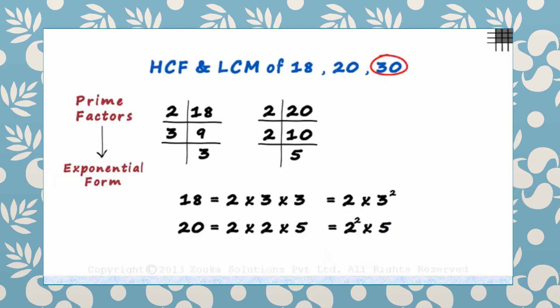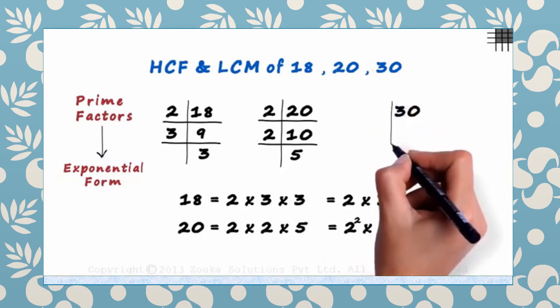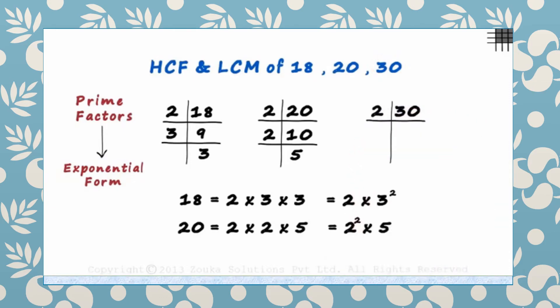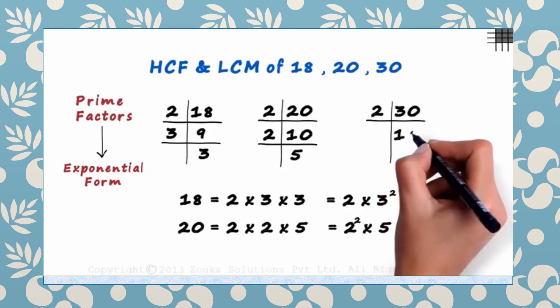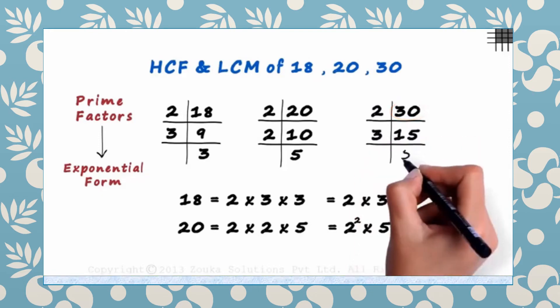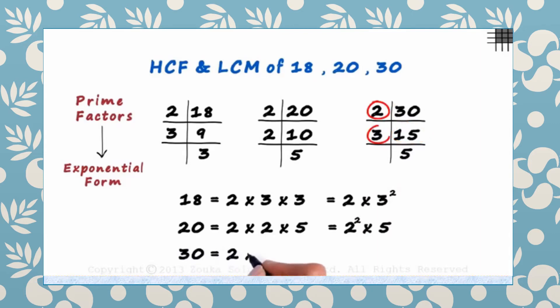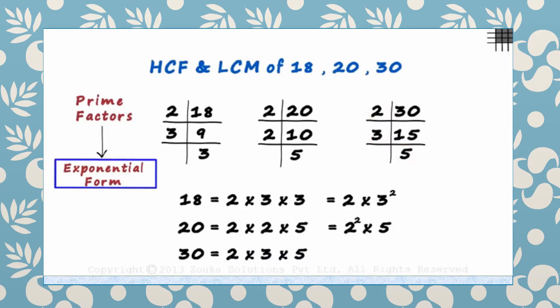The last number is 30. It is divisible by 2 — 2 times 15 is 30. And 3 times 5 is 15. So we can write 30 as 2 times 3 times 5. In exponential form, it is written in the same way.